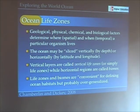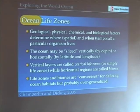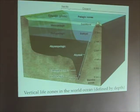Life zones and biomes are convenient for defining ocean habitats, but in many regards they're probably too general. They do give us some broad brushstrokes by which we can define the kinds of conditions that allow life to exist in the world ocean. Here is a figure from the book showing the vertical life zones that we find in the world ocean.